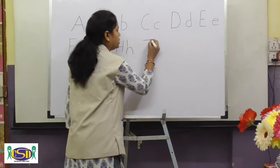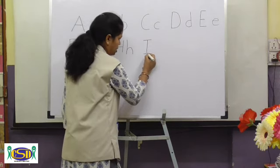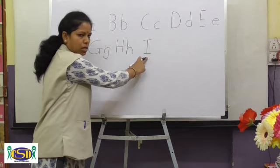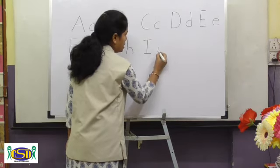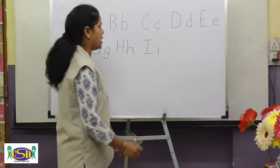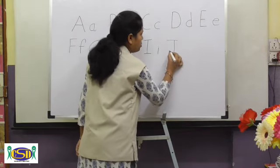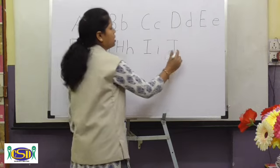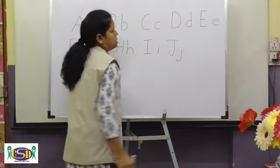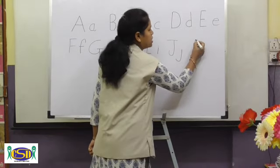Standing line, slipping line, standing line — capital I. Standing line, dot — small i. Slipping line, left curl — capital J. Left curl, dot — small j.